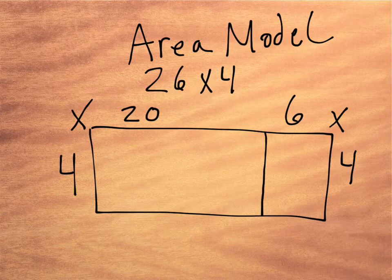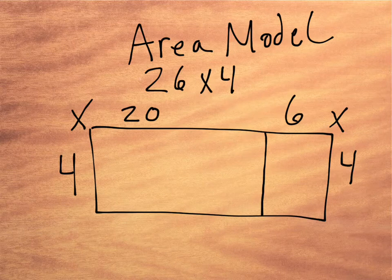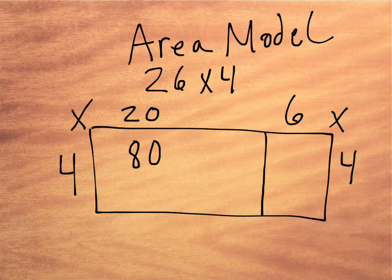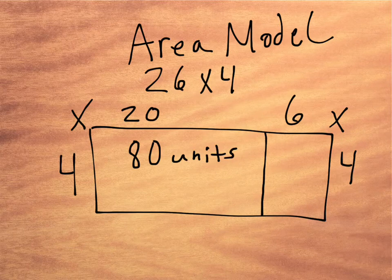So 20 times 4 is the same as 4 times 2 tens, which would be 8 tens, or 80. So that rectangle is 80 square units.